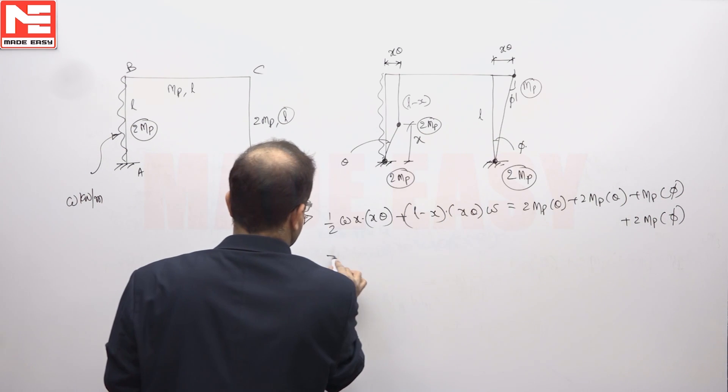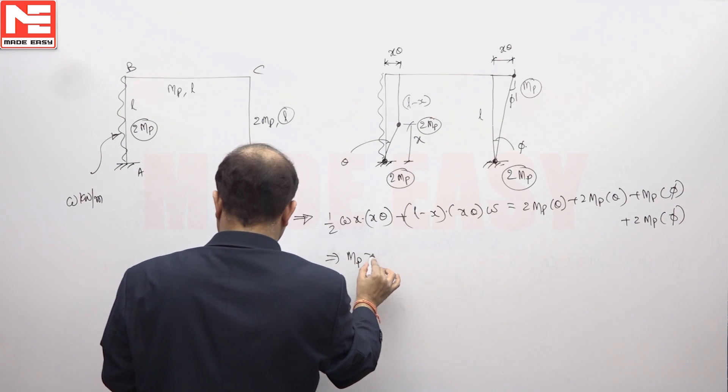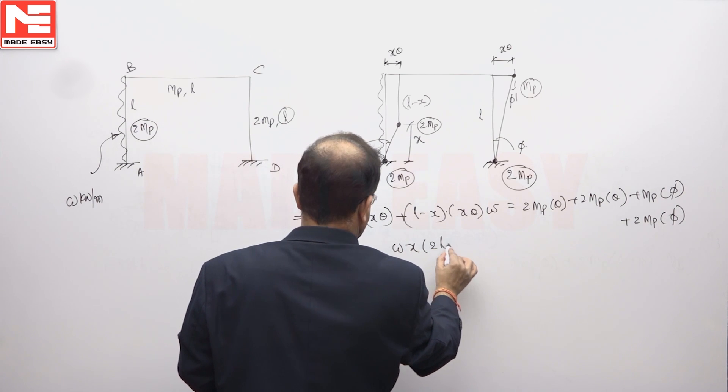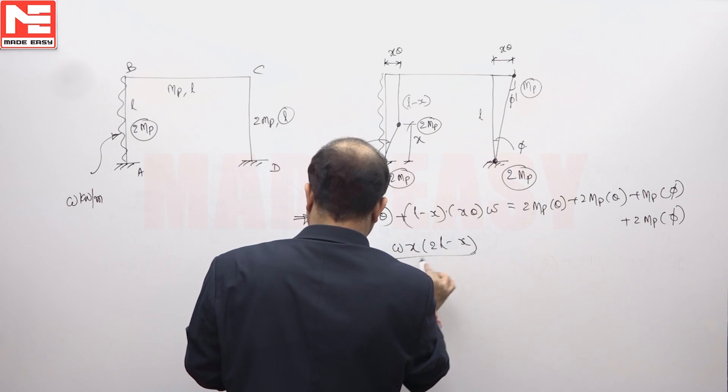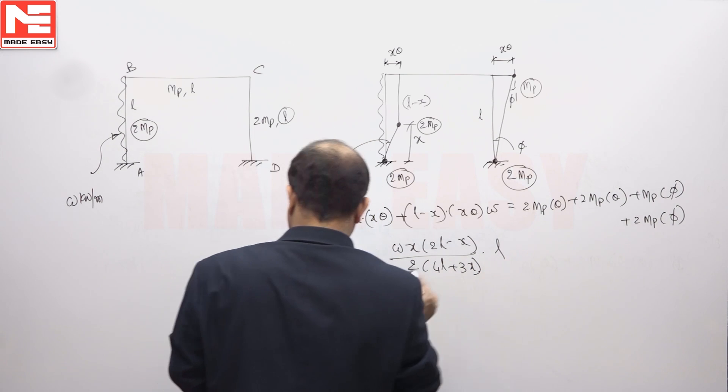So you will get from this, MP is equal to W X into 2L minus X by 2 into 4L plus 3X into L.